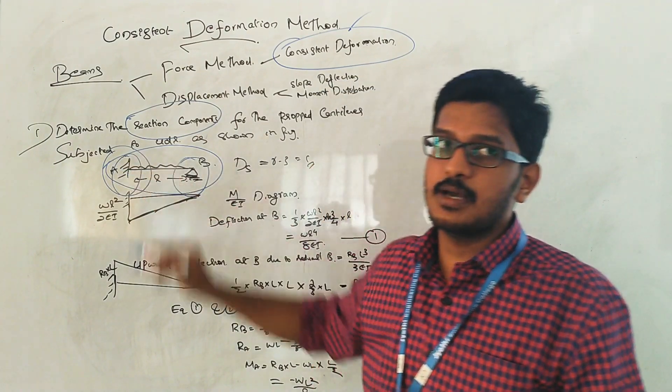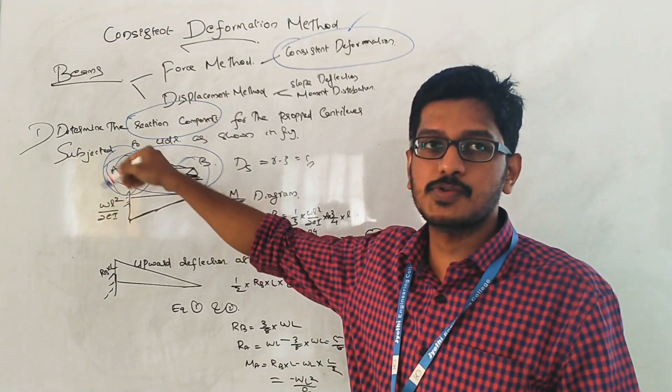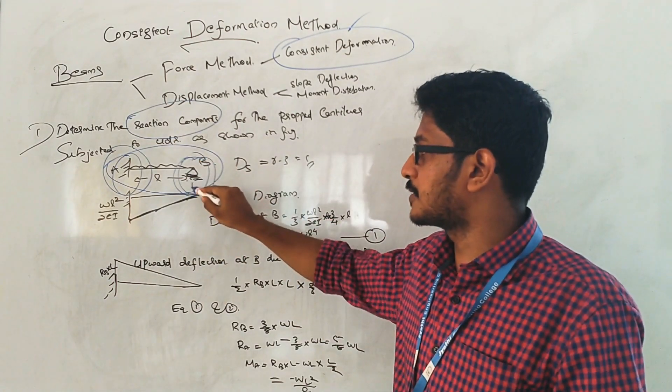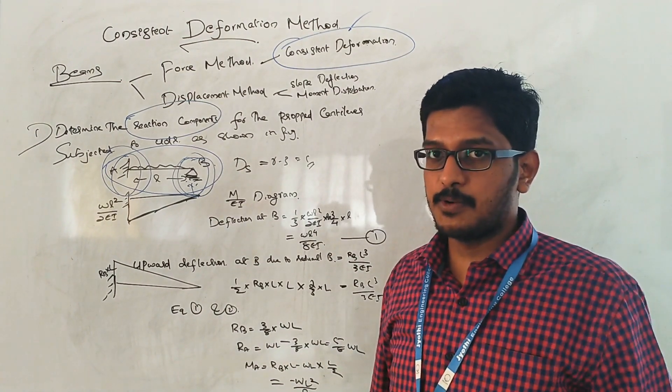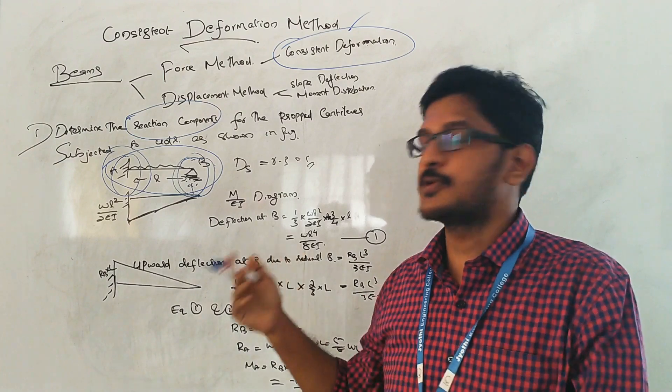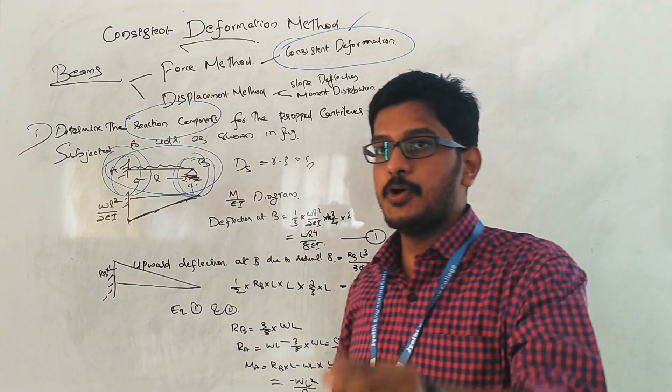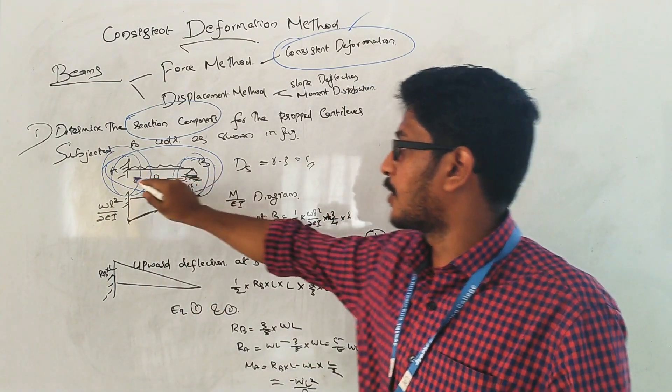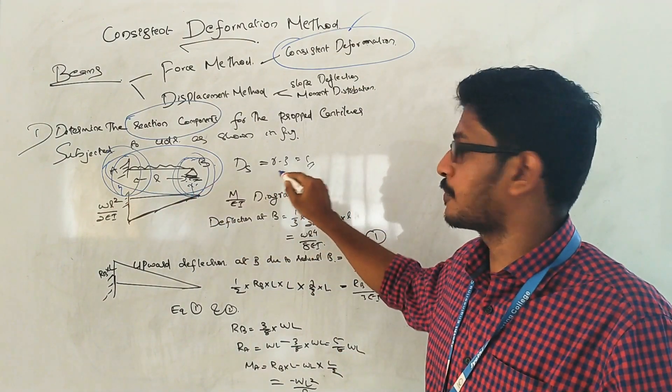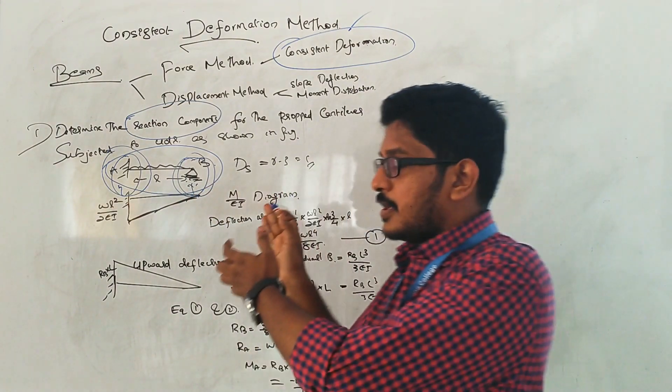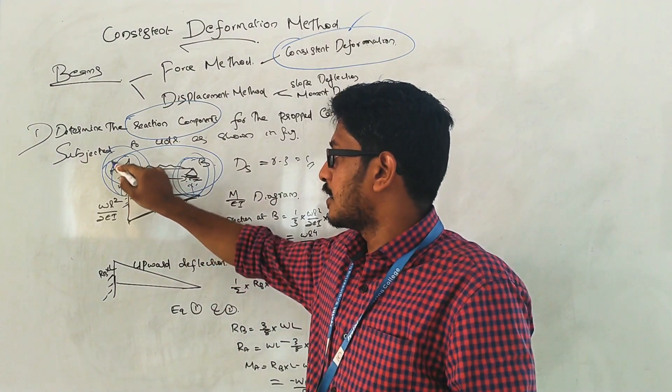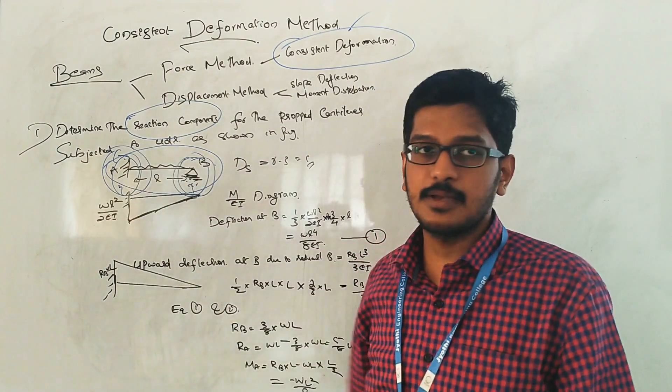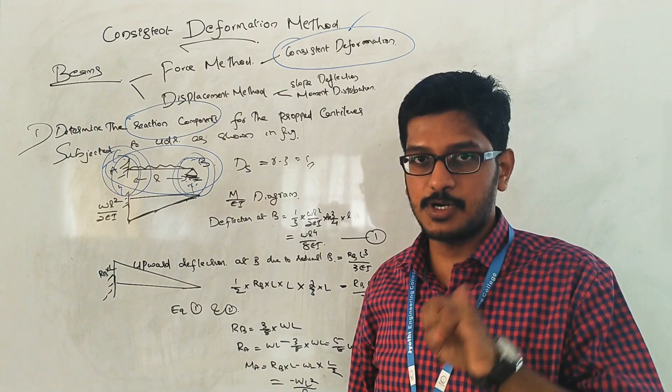There are three reactions at the fixed end: one vertical, one horizontal, and one moment. At point B there is only one reaction component. Number of reactions is 4, so 4 minus 3 equals 1 redundant member. If you take that moment as redundant, then this becomes a simply supported beam. That's one possibility.